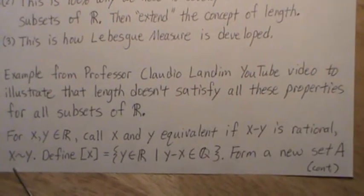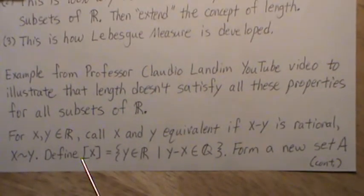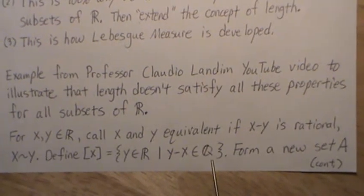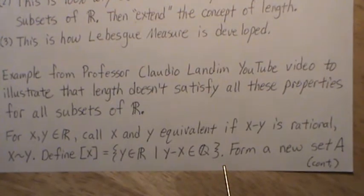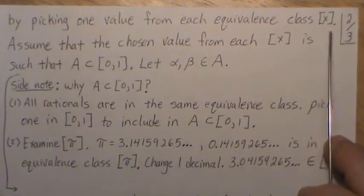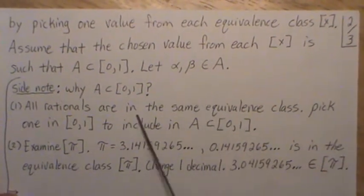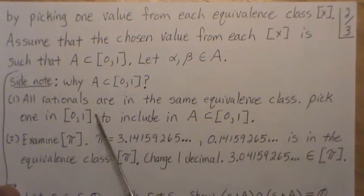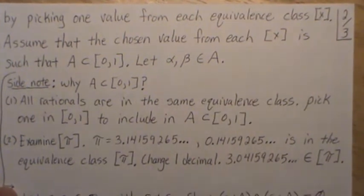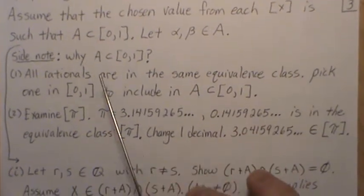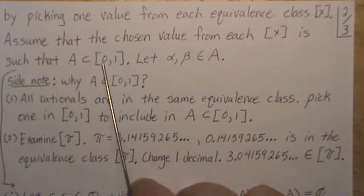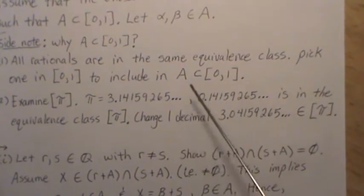Let X and Y be real numbers and call X and Y equivalent if the difference X minus Y is rational, written X ~ Y. We define the equivalence class of X as all Y in R such that Y minus X is rational, where Q denotes the rational numbers. We want to form a new set A by picking one value from each equivalence class — there are infinitely many equivalence classes — and we choose these values such that A is contained in the interval [0, 1].